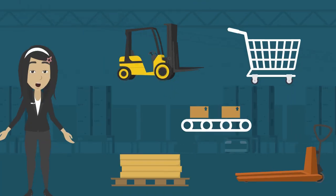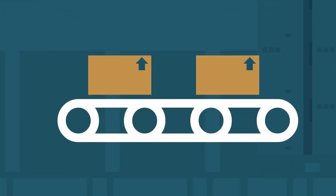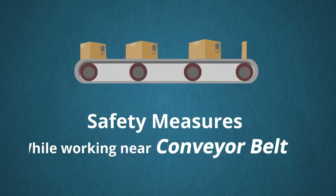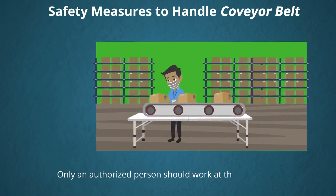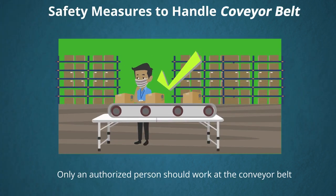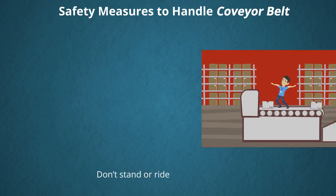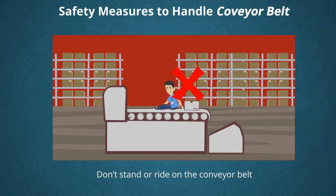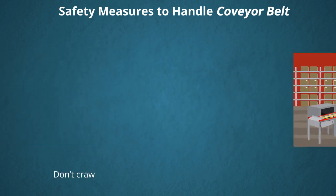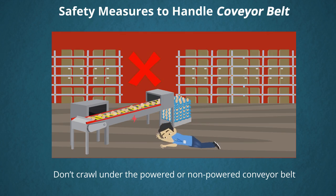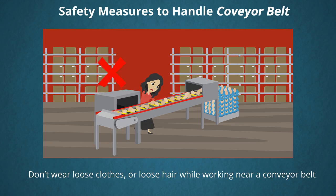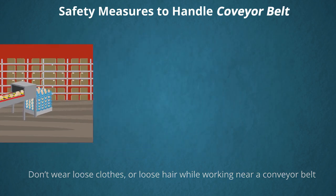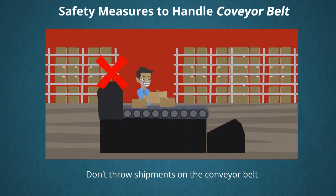Now we come to the conveyor belt. Safety measures to follow: the conveyor must always be used by an authorized person only. Don't stand or ride on the conveyor belt. Don't crawl under a powered or non-powered conveyor belt. Don't wear loose clothes or have loose hair while working near a conveyor belt. Don't throw shipments on the conveyor belt.